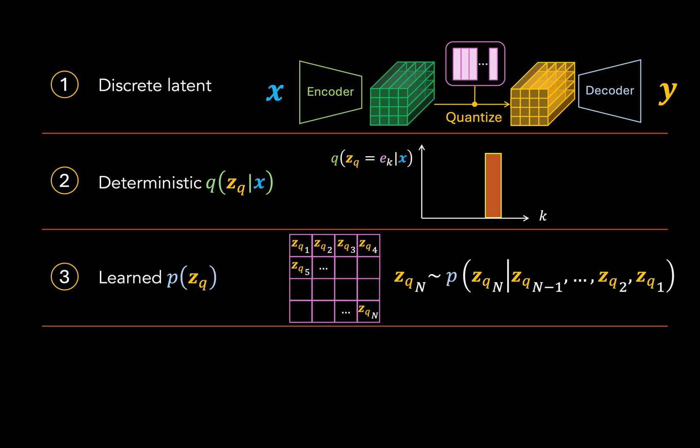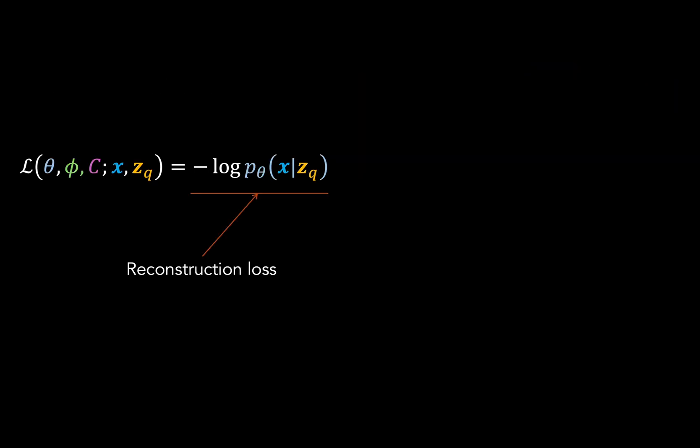The only thing left to talk about is the loss function. And as it turns out, there is quite a lot to talk about here. So we've already established that there is no KL divergence loss, but we still have a reconstruction loss in the form of this negative log likelihood here. Now the calculation of this loss depends on all three components of the model.